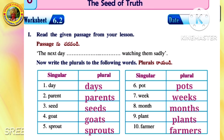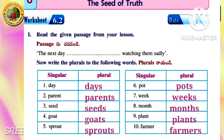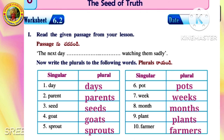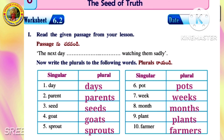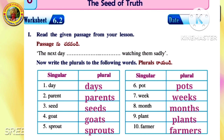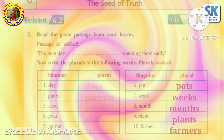Sixth: Pot — Pots. Seventh: Week — Weeks. Eighth: Month — Months. Ninth: Plant — Plants. Tenth: Farmer — Farmers.